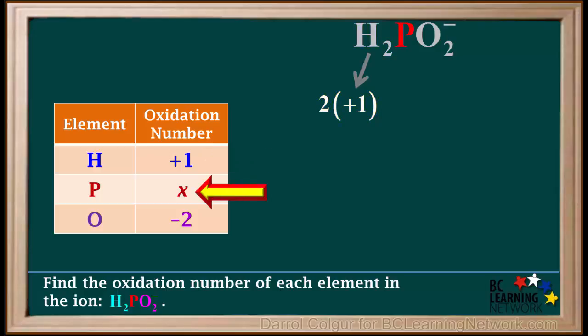The oxidation number of a phosphorus atom we've called x. So, below phosphorus, we'll write plus x.